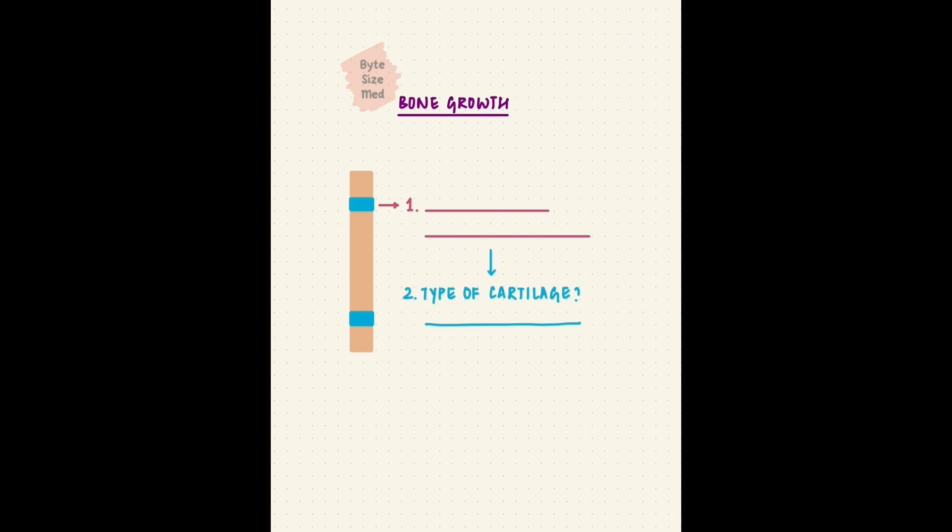Bones form, and they grow. Bones grow because of this cartilaginous structure. Your task is to recall: what it's called, what type of cartilage does it have, is it temporary or permanent, and in a long bone like this, where else would you find cartilage that stays permanent? Pause the video here.